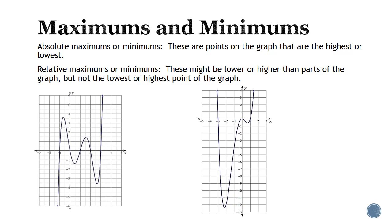For maximums and minimums, you point on the graph where they are. Absolute maximums or minimums are the highest or lowest points — there are no points above or below them. Relative maximums or minimums may be lower or higher than parts of the graph but aren't the overall lowest or highest. For this first graph, we have high points here and here, but these are not the highest points on the graph, so these are relative maximums. We also have low points here and here, but these are not the lowest points, so these are relative minimums.